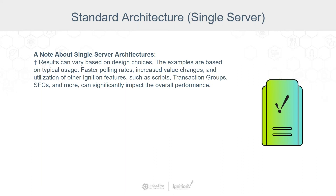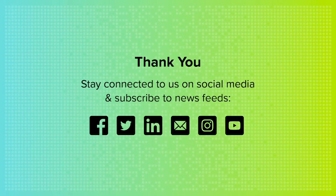Clients generally take CPU as opposed to memory — CPU is the heavier resource consumed. Everything added to the system takes CPU cycles, and the amount of CPU available is going to affect how much you can scale up for each of those items.